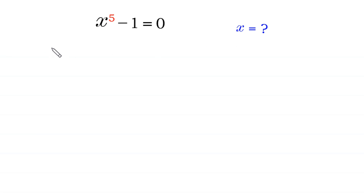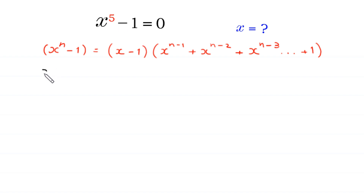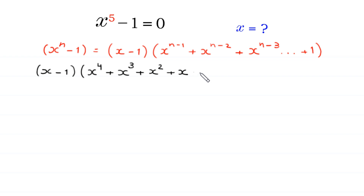Let's start by using this algebraic identity: x to the power n minus 1 is equal to (x minus 1) times (x to the power n minus 1 plus x to the power n minus 2 plus x to the power n minus 3, and so on, up to plus 1). According to this identity, x to the power 5 minus 1 equals (x minus 1) times (x to the power 4 plus x to the power 3 plus x squared plus x plus 1) is equal to 0.